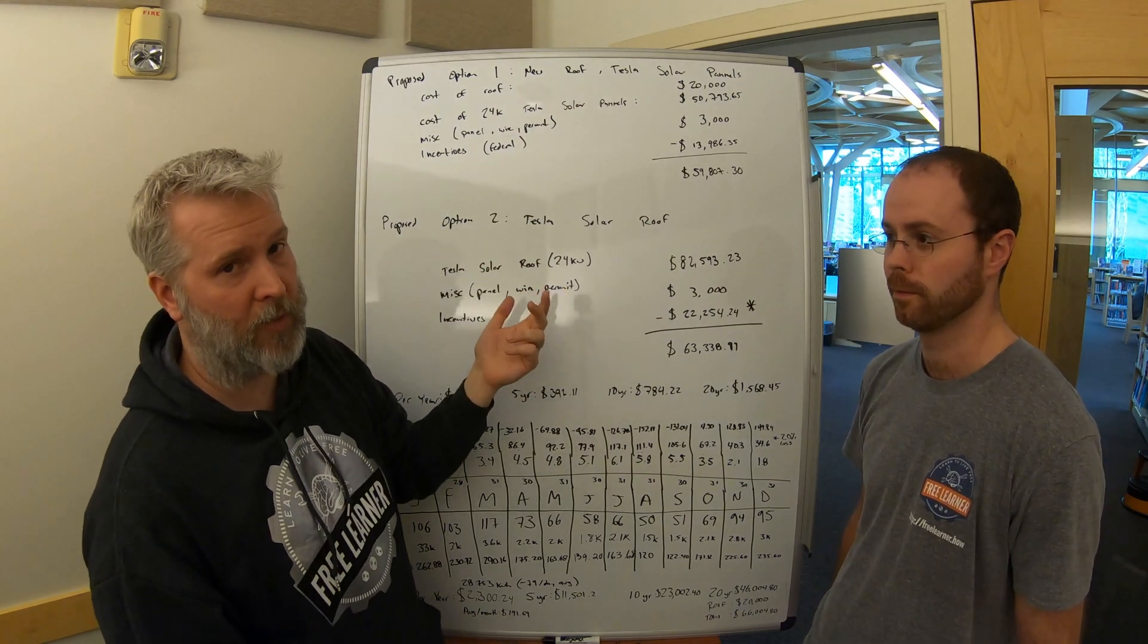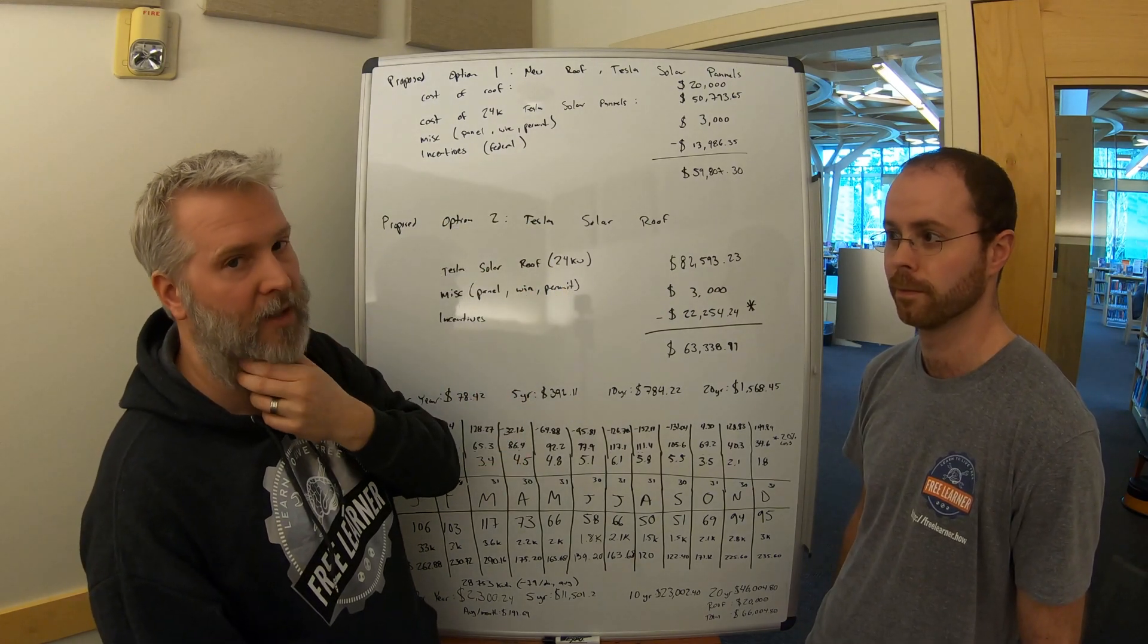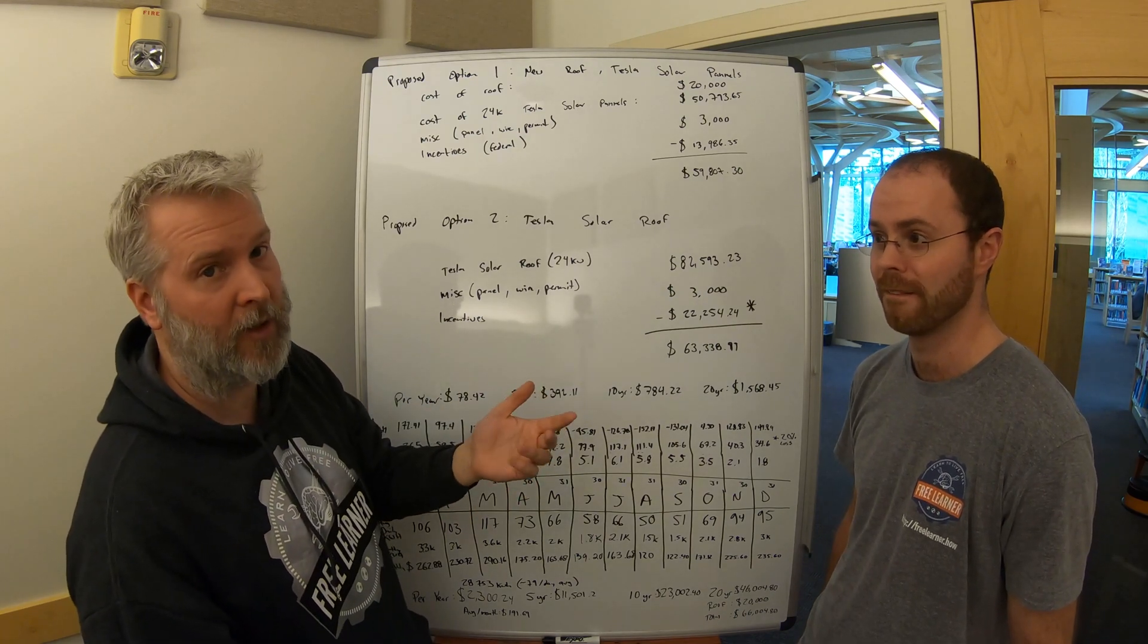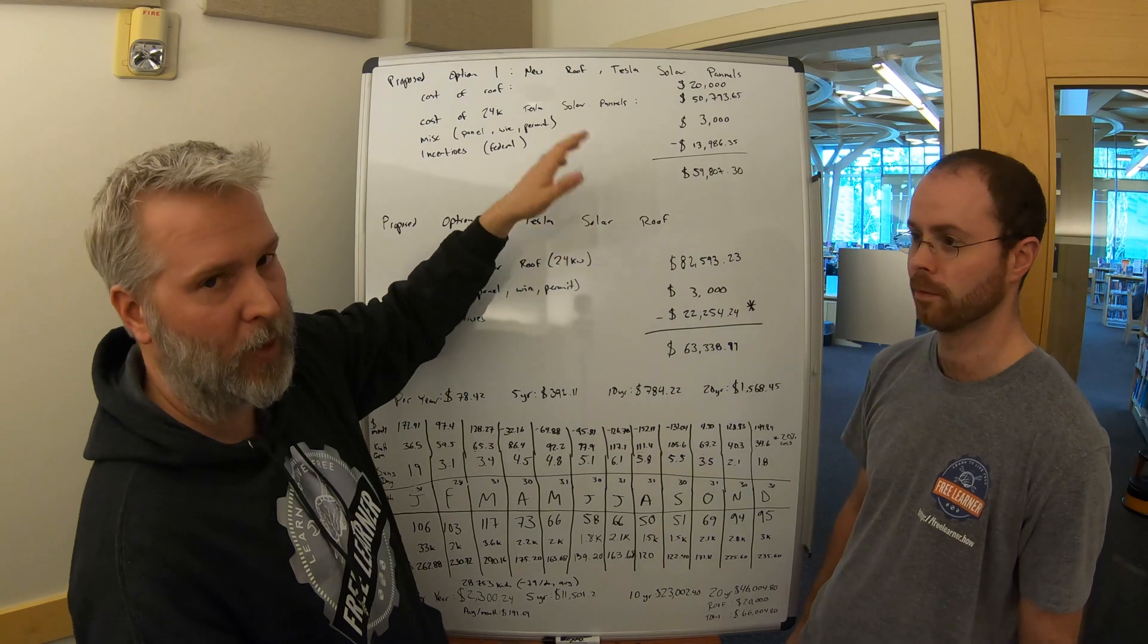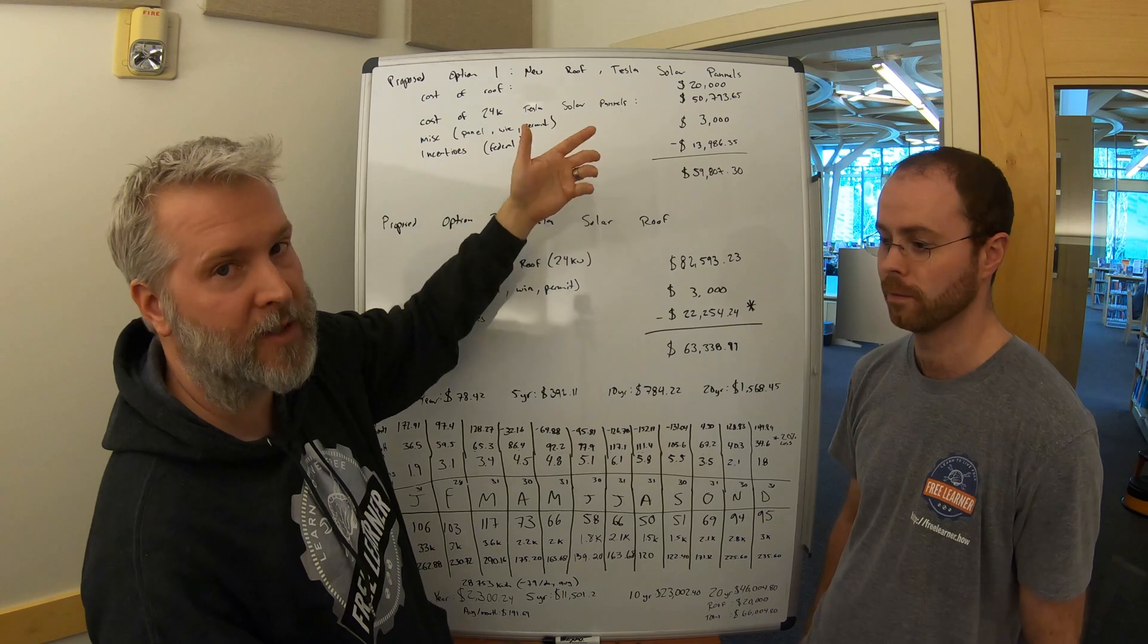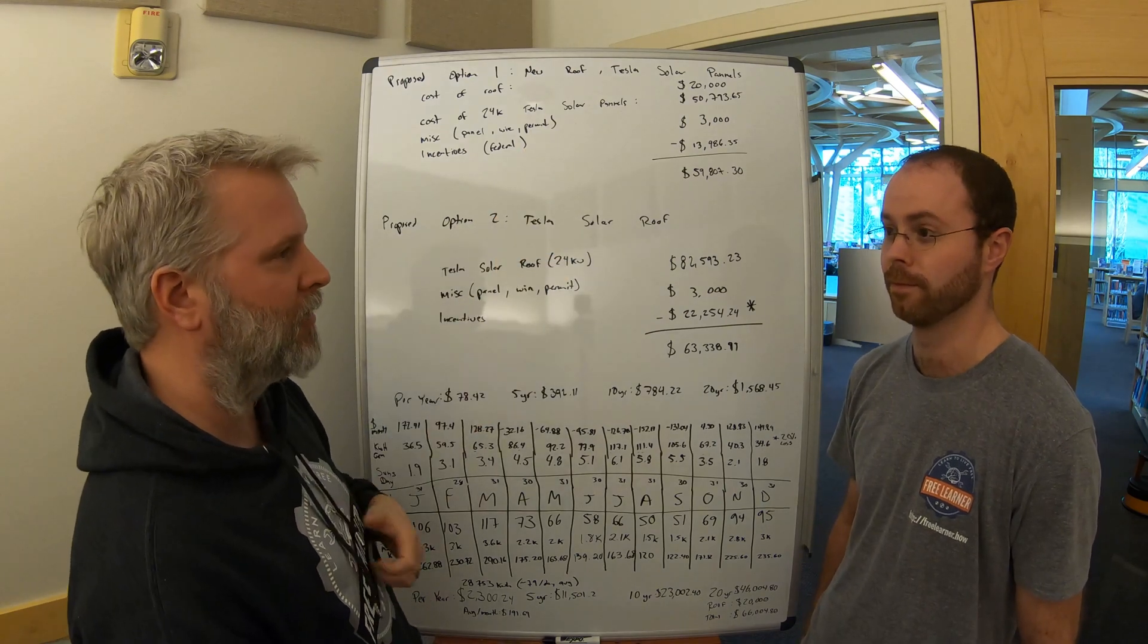And then there's a 26% federal ITC tax credit. That is only until this year of 2020. Next year it's going to be 22%, and then it's gone forever for residential. So make sure if you are thinking about this, do it quickly, because this is when it's installed, and you know how Tesla has a tendency to wait on their stuff.